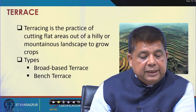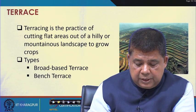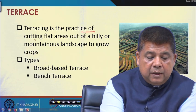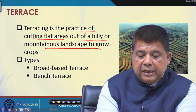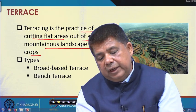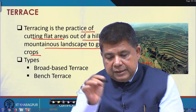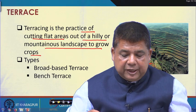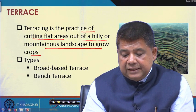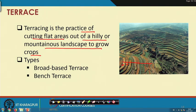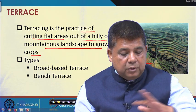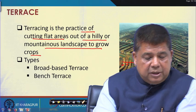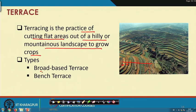The next engineering measure is terracing, which is the practice of cutting flat areas out of a hilly or mountainous landscape to grow crops. On hilly terrain with steep slopes, flat areas are cut to create step-like structures that facilitate cultivation. The two types of terraces commonly adopted are broad base terraces and bench terraces. Week 4 will be spent on terracing and the design of terraces.